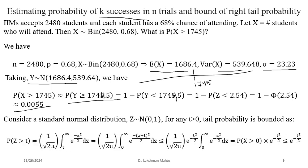Regarding probability of error: consider noise with standard normal distribution, mean 0 and variance 1. We want to compute the probability that t > 0. Using the normal PDF, an upper bound estimate is e^(-t²/2). This has various applications in signal communication.